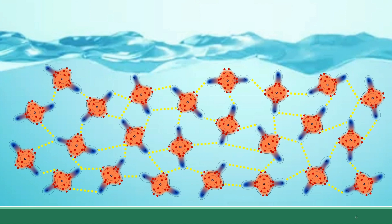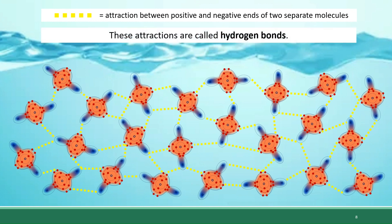We explained the existence of this network of attractions previously, but we didn't actually state what they are called. Each little yellow dotted line that you see here is referred to as a hydrogen bond.